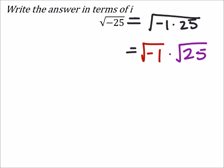The square root of negative 1 is i, and then I'd have that multiplied by the square root of 25, which is 5.